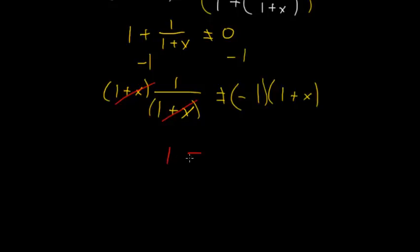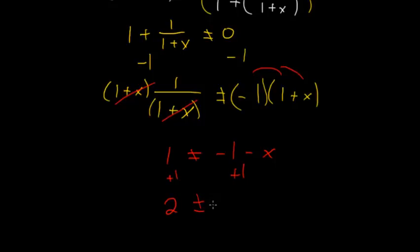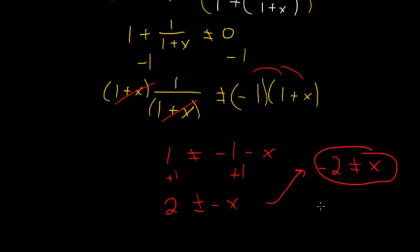We have 1 cannot equal negative 1 minus x. Adding 1 to each side gives 2 cannot equal negative x. Multiplying everything by negative 1, we get negative 2 cannot equal x. So combined with our other answer, x cannot equal negative 1 and x cannot equal negative 2. These are our final solutions.